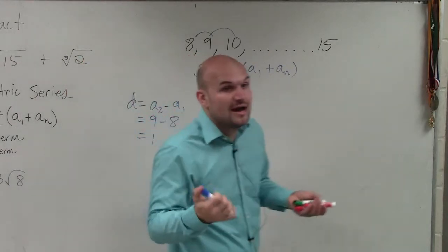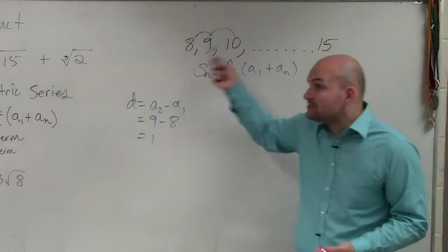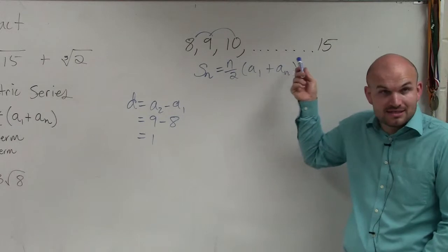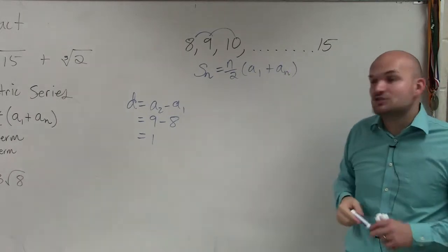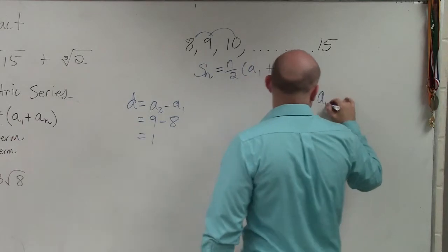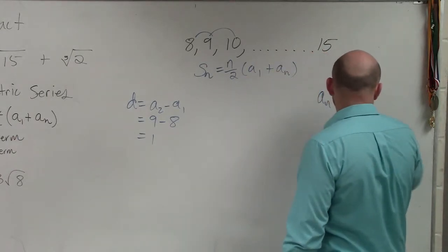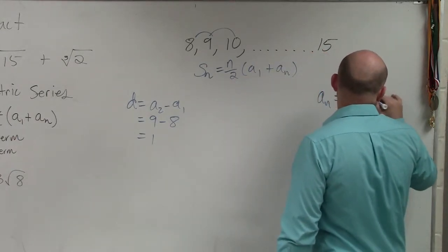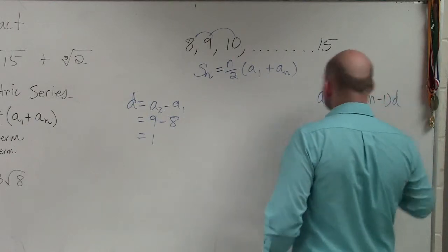Now, the next thing is we need to figure out how many numbers there are. In this one, they don't tell you how many terms there are, correct? So what we need to do is we actually need to go back and use our formula, a sub n equals a sub 1 plus n minus 1 times d. We need to actually figure out what is our number of terms.